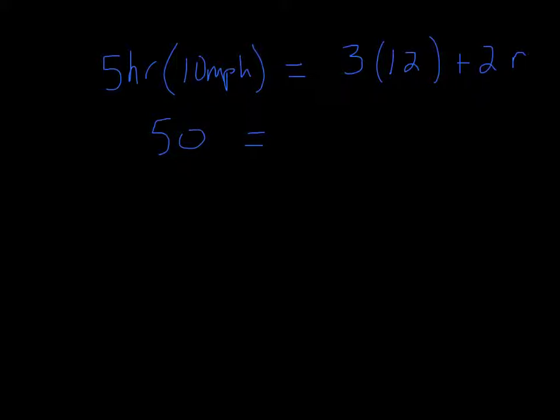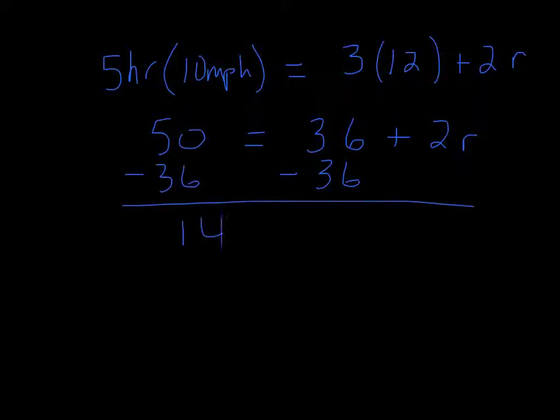If we solve these, three times 12 is 36, and we still have the 2R. Then we just solve for R. This is all stuff we've done before. So minus 36 from both sides. We get 14 equals 2R. Divide by 2, and the rate for the last two hours will be 7 miles per hour. She made 7 miles per hour for the last two hours.